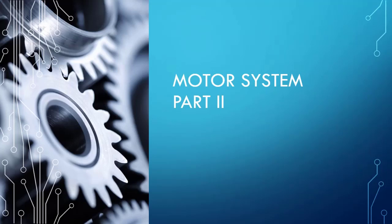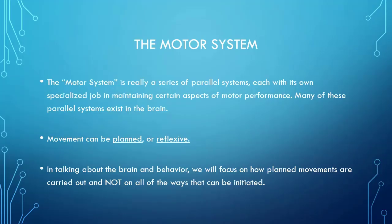Here we go with the motor system part two. As a bit of a recap, when we're talking about the motor system, we're actually talking about a series of parallel bodily systems, each of which has a specific motor job. Any of the movements carried out by these systems can be planned or reflexive, but we're mainly going to be focusing on the jobs that these different systems carry out.